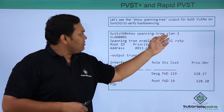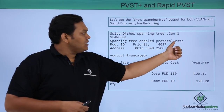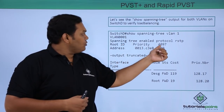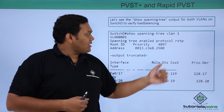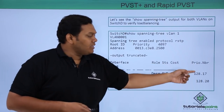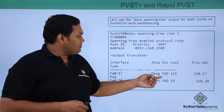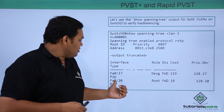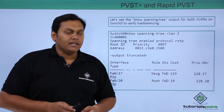Running show spanning tree VLAN 1 shows the VLAN 1 information: spanning tree is enabled as Rapid STP, the root ID is 4097 with the MAC address of Switch A. The output also shows interface details including role, status, cost, and priority number. Fast Ethernet 17 is a designated forwarding port with priority 128.1, and Fast Ethernet 20 is a root forwarding port with priority 128.20.